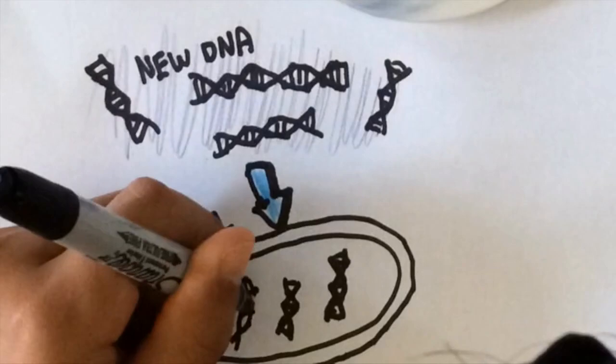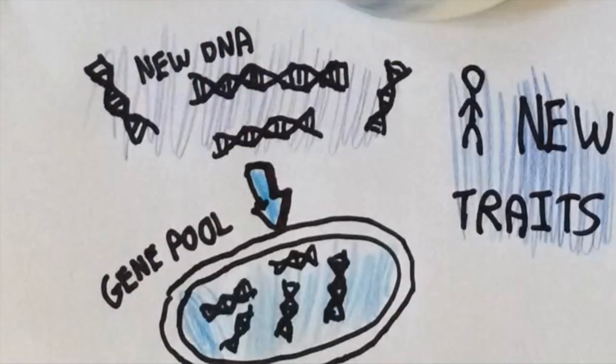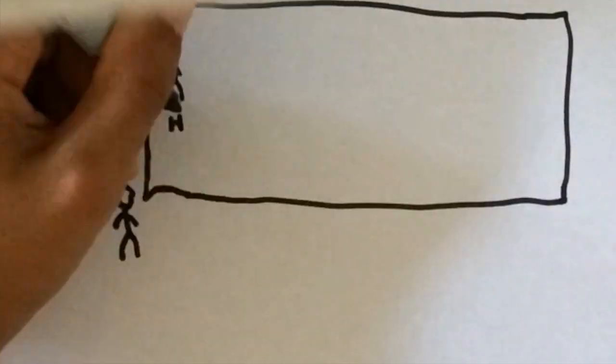As more and more humans arrived, the gene pool became more and more diverse, giving us unique new traits that allowed our species to prosper in other climates and survive in new conditions.